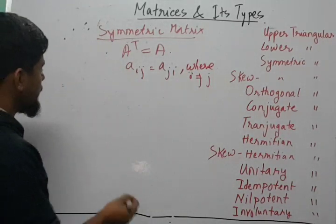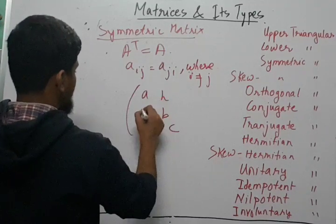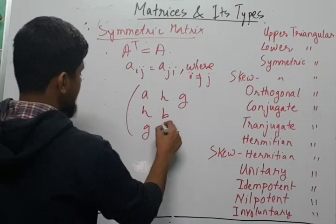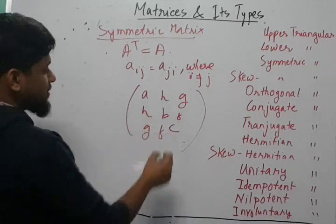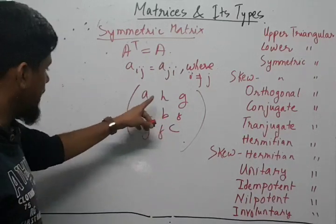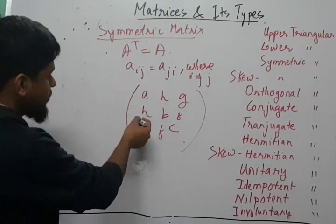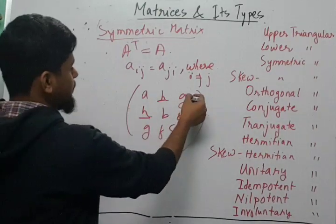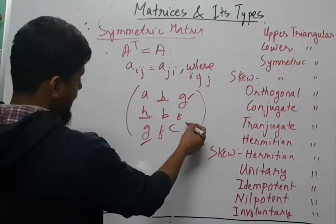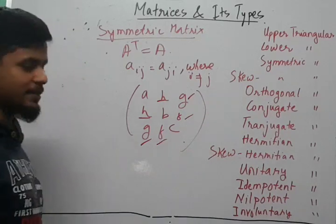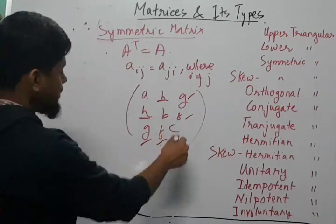For example, in a symmetric matrix of format [a, b, c; h, ?, f; g, f, ?], the element a₁₂ and a₂₁ are the same, the elements a₁₃ and a₃₁ are the same, and the elements a₂₃ and a₃₂ are the same. The diagonal elements are not considered here, but this is the structure normally associated with a symmetric matrix.